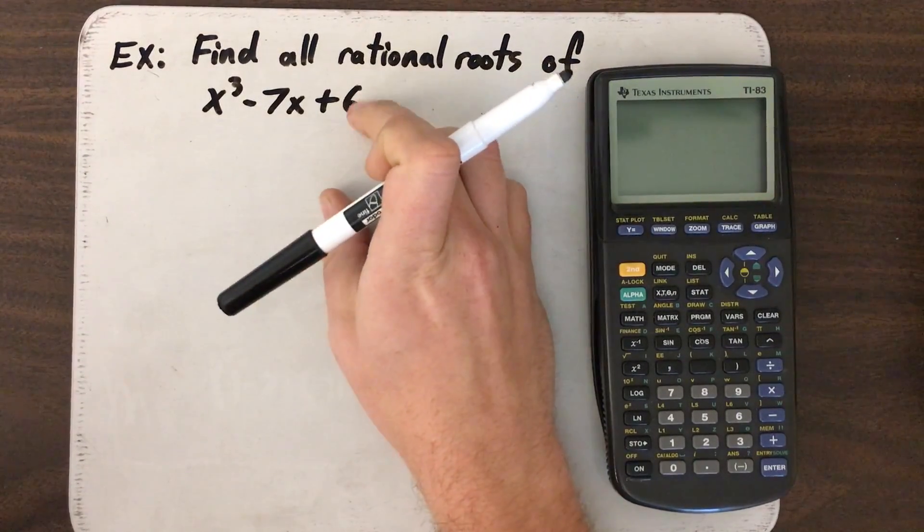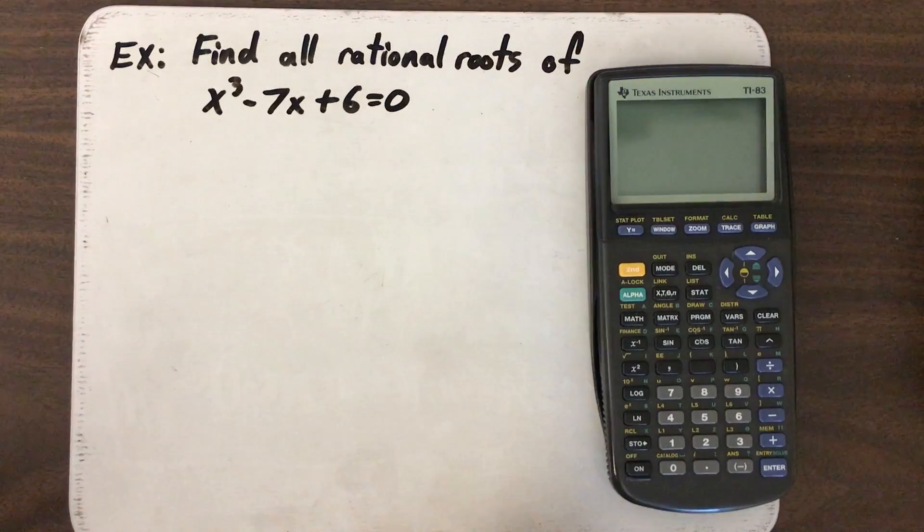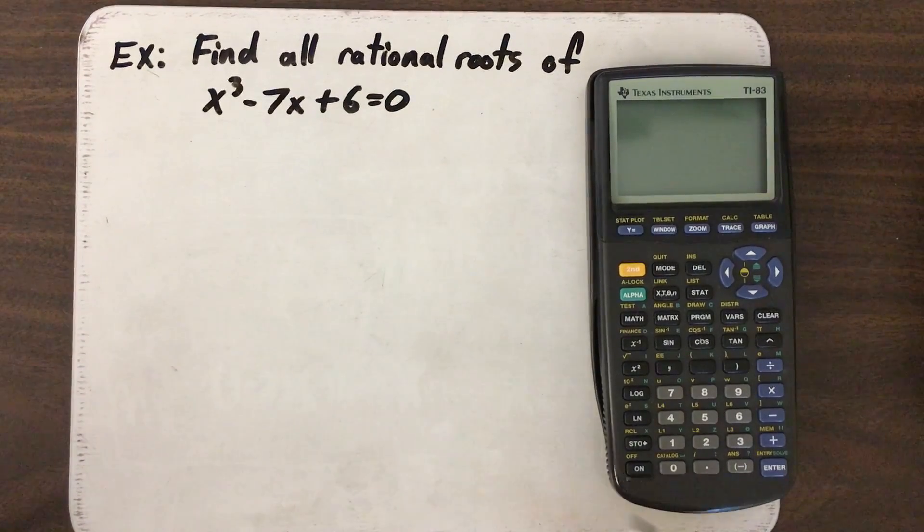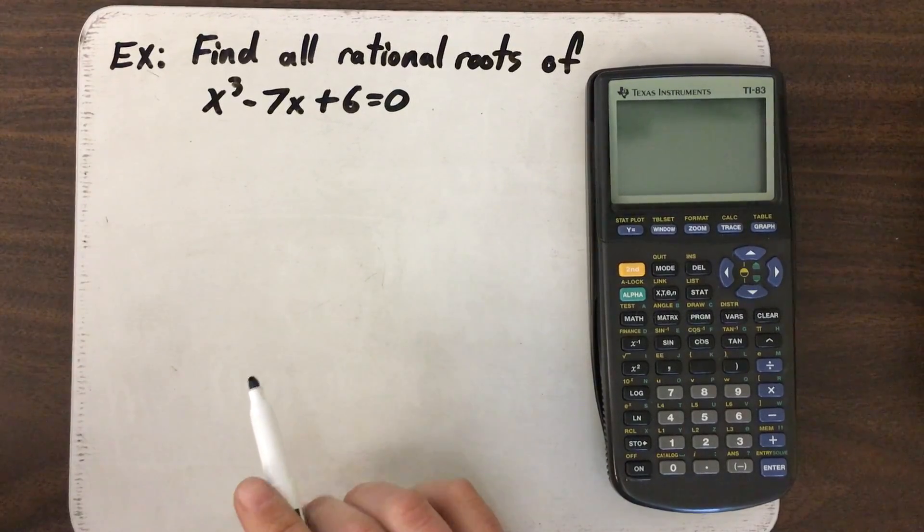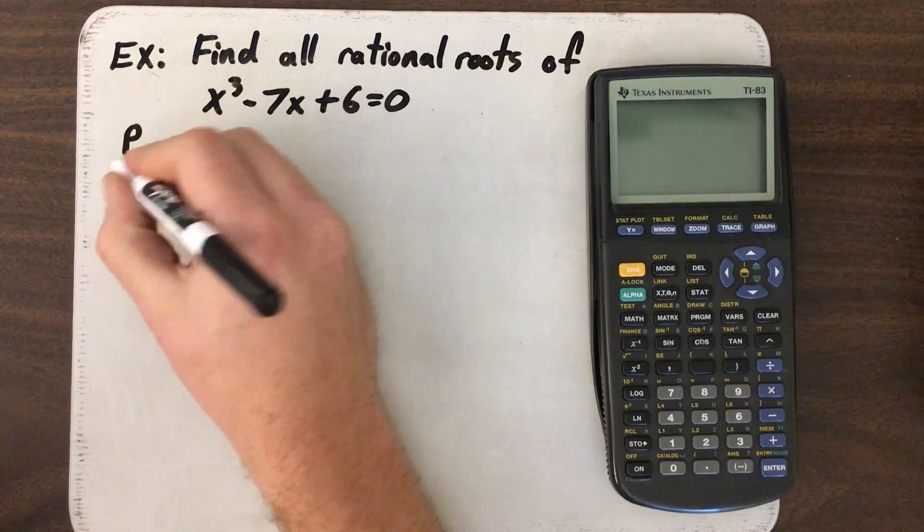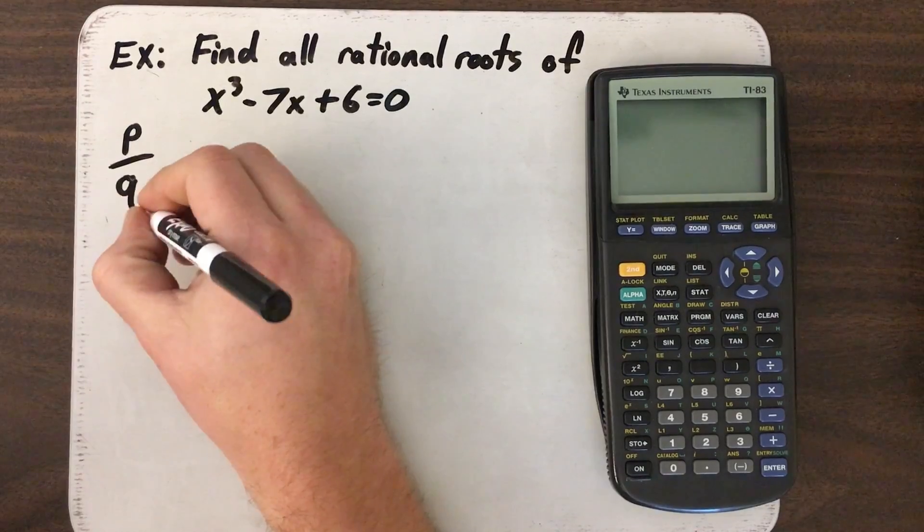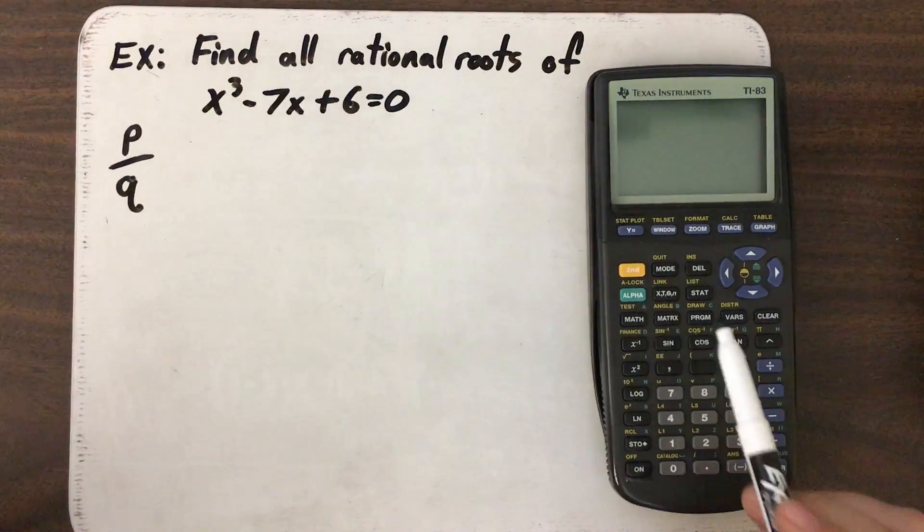Actually, I should probably make this like that. That would be a little more appropriate. So we need to find all the rational roots of this equation right here, and we're going to be using the P over Q method, and then we are going to test that using a TI calculator.